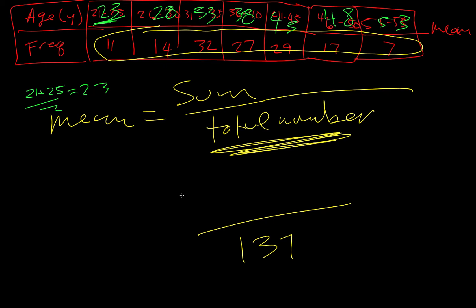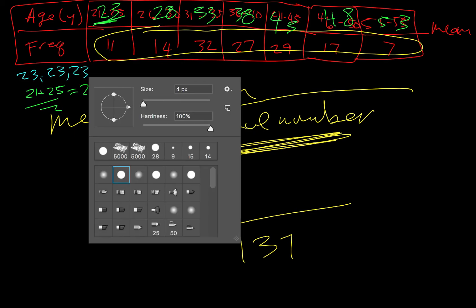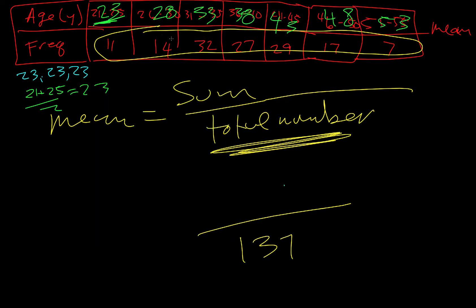Okay, now remember what this is saying is there are 11 23-year-olds, or that's our estimate. There are 14 28-year-olds. So if I was to write this out, I would write 23, 23, 23 eleven times, and then I'd write 28 fourteen times, etc.